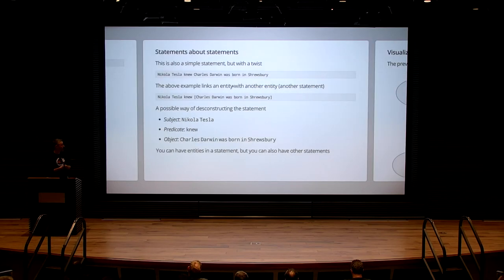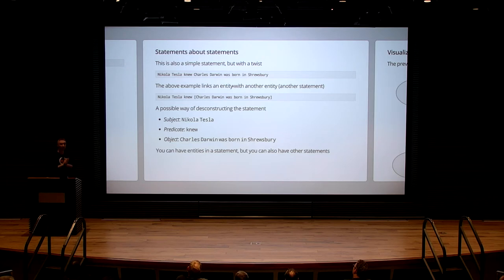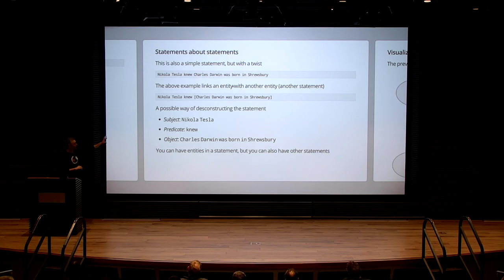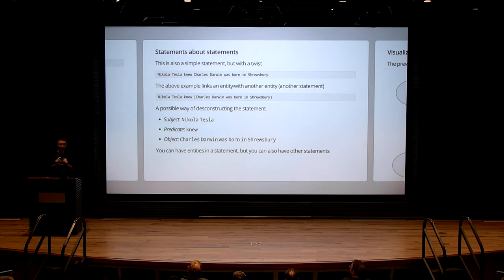To twist it a bit more, here's one more example: 'Nikola Tesla knew that Charles Darwin was born in Shrewsbury.' We have a subject, Nikola Tesla; a predicate, 'knew'; but the object we're predicating is not an entity like Charles Darwin and not a value — it's a whole statement again. In RDF land you may remember this as reification. Think about it: I have statements that are entities — you can think of these as nodes in a graph. We have verbs which link those entities together, and entities can be entities themselves, like 'person: Charles Darwin,' or they can be other statements, which are slightly more complex.